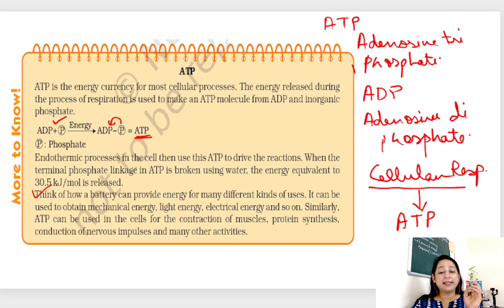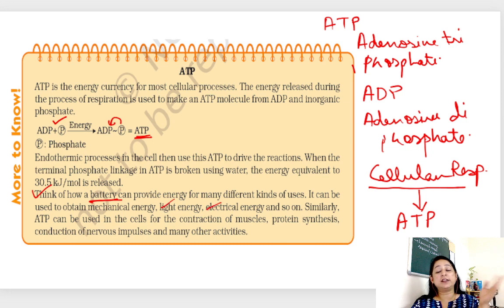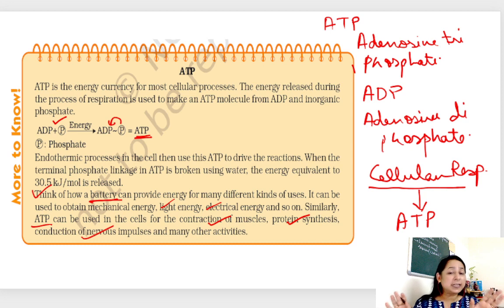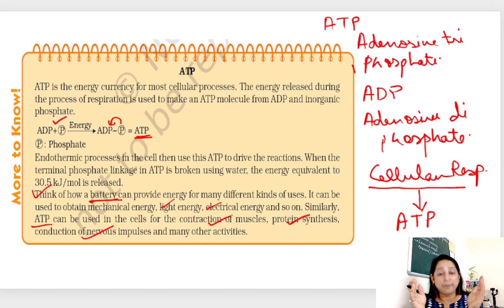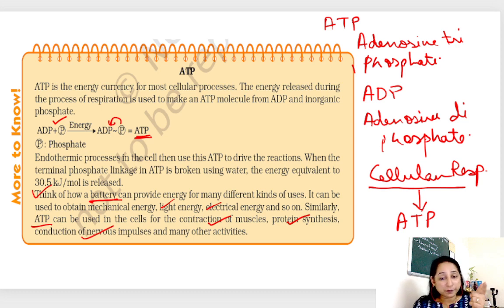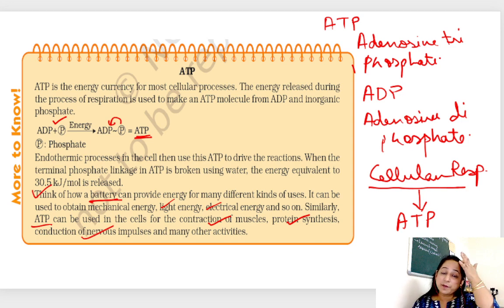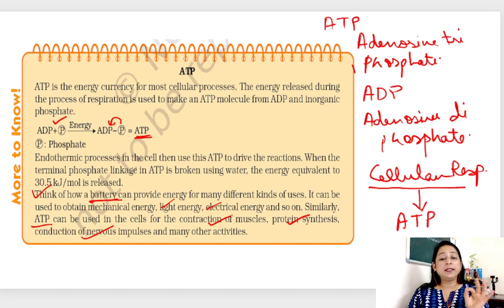They give the example of a battery — how it provides different types of energy. Similarly, ATP is used by cells for contraction of muscles, protein synthesis, and conduction of nerve impulses. What you need to remember: one — the full forms of ATP and ADP; two — ATP is formed when ADP combines with one phosphate molecule; three — the metabolic activities that require ATP, which occur only when the amount of ATP in the body is optimum.